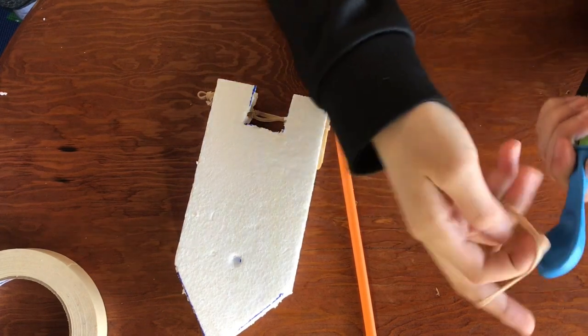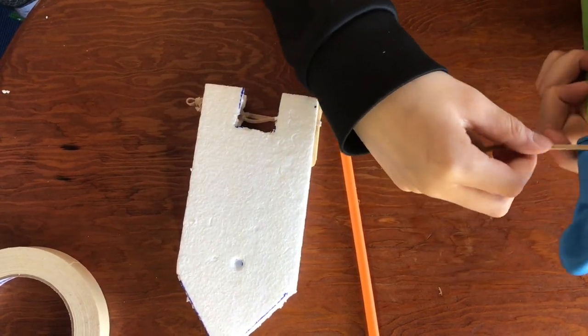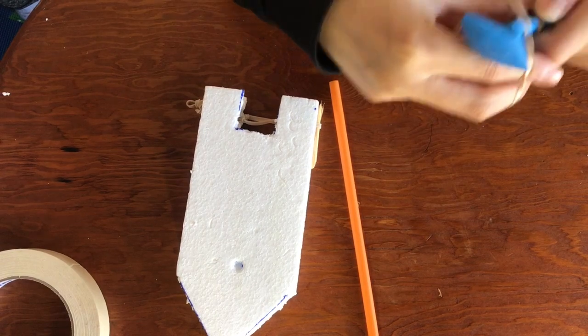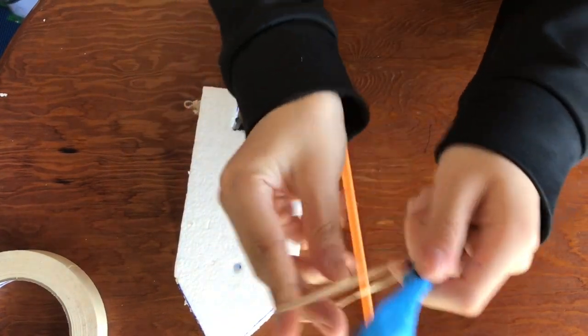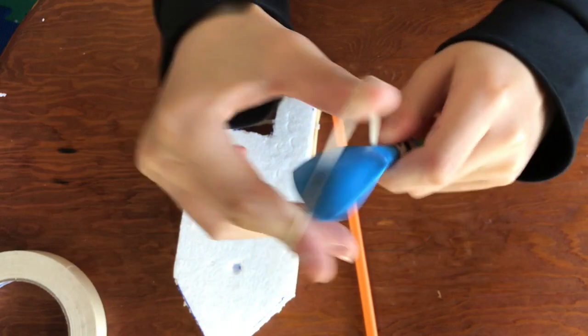Once you have got it through, tie the balloon to the straw with a rubber band. Make sure it is tight.